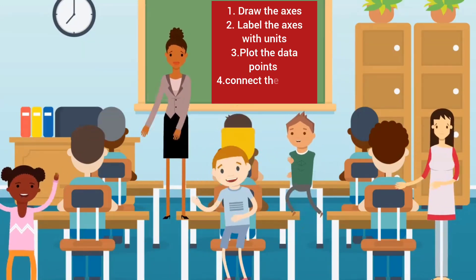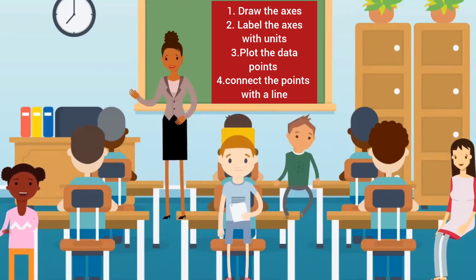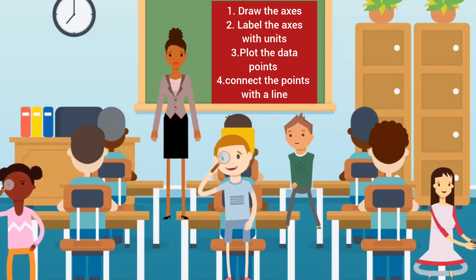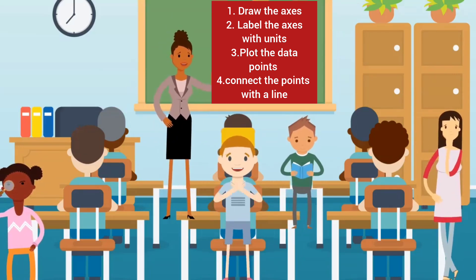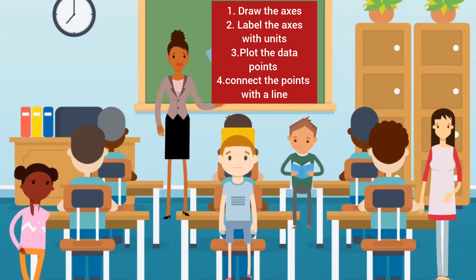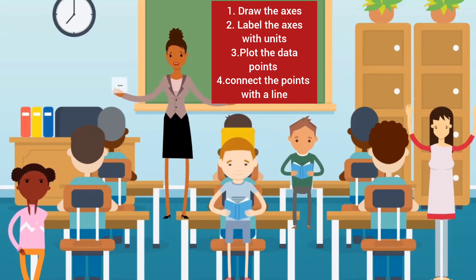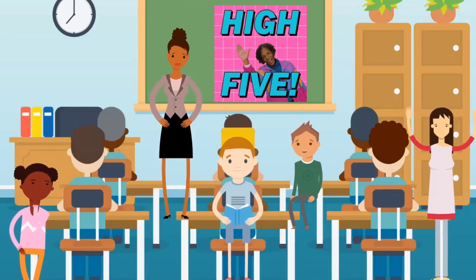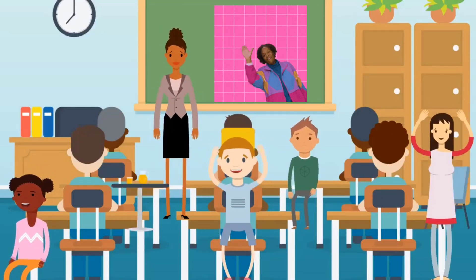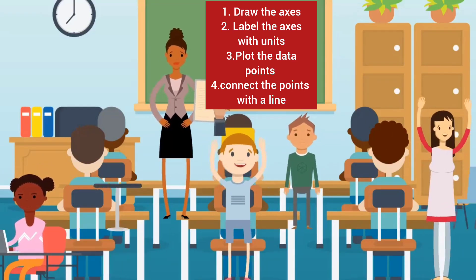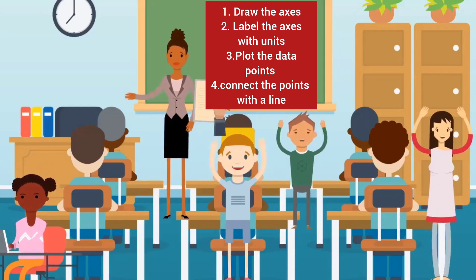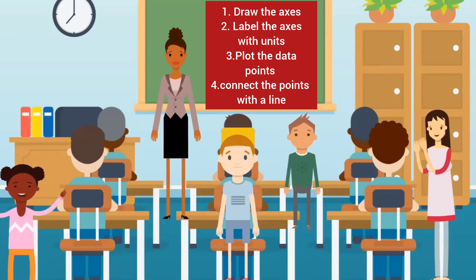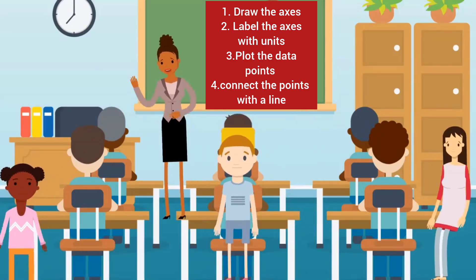Here are the steps: One, draw the axes. Two, label the axes with units. Three, plot the data points. Four, connect the points with a line. Can you arrange them in the correct order? Great job! The correct order is: first, draw the axes; two, label the axes; three, plot the data points; four, connect the points with a line.